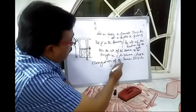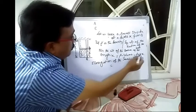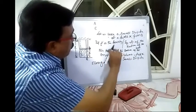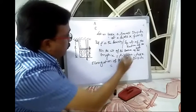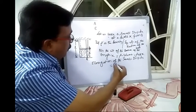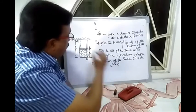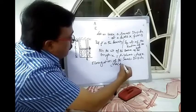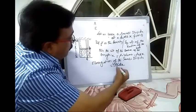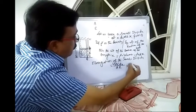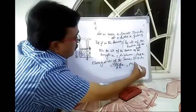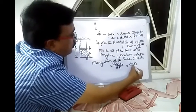Here P is equal to the total weight of this section, that is rho A x, and L is dx, divided by A into E. A and A cancel, giving rho x dx by E.